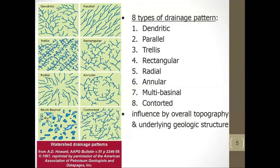Looking at a map of rivers and streams, you can see they make different kinds of patterns called drainage patterns, which tell us something about the land the rivers are flowing over. There are eight types of drainage patterns: dendritic, parallel, trellis, rectangular, radial, annular, multibasinsal, and contorted. These drainage patterns are influenced by overall topography and underlying geologic structure.